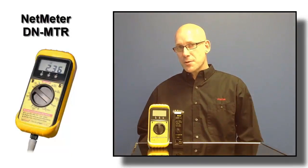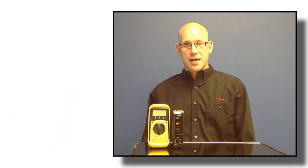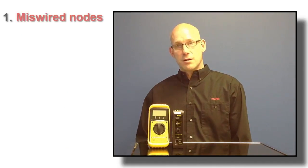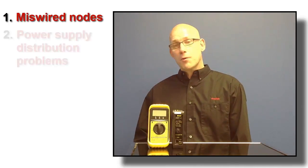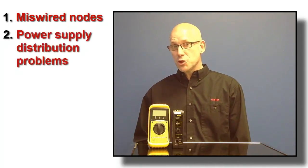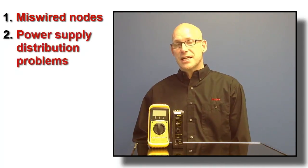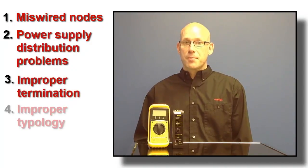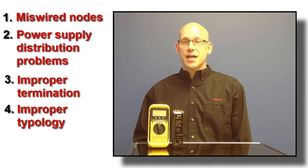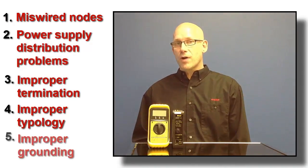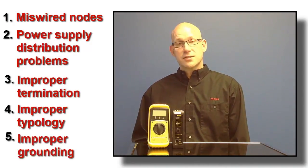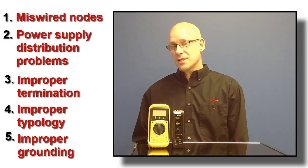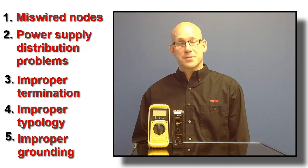Some of the most commonly encountered problems when it comes to DeviceNet are miswired nodes, power supply distribution problems, improper termination, improper topology, and improper grounding. Let's take a quick look at how these tools will help you identify these problems in your network.